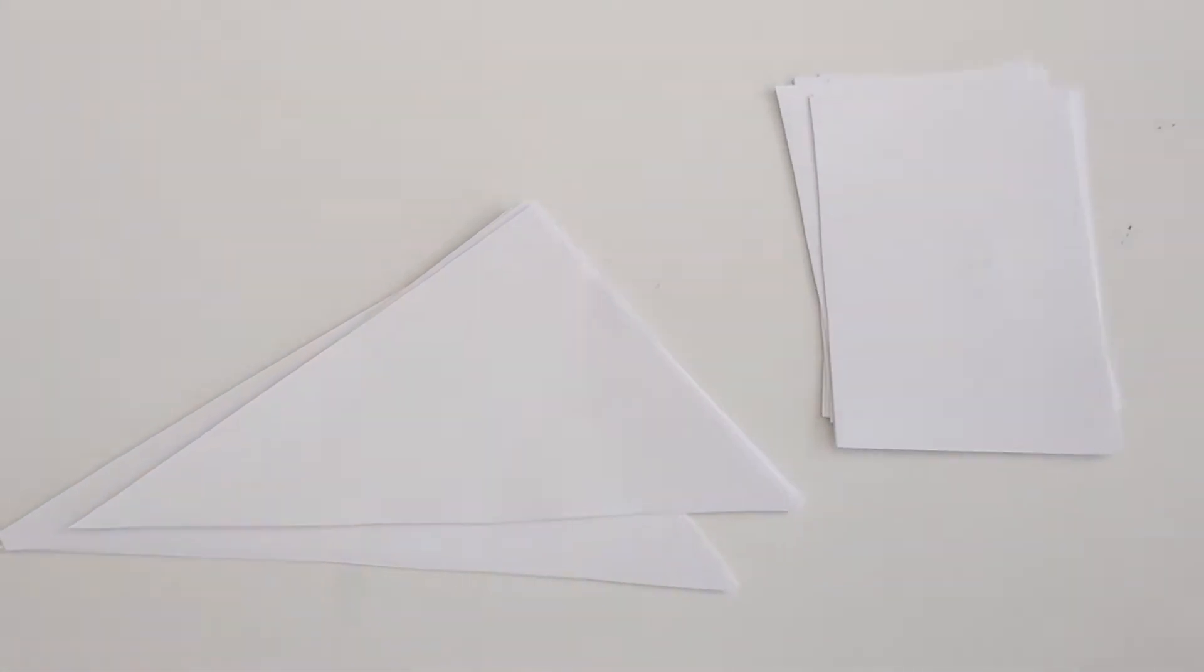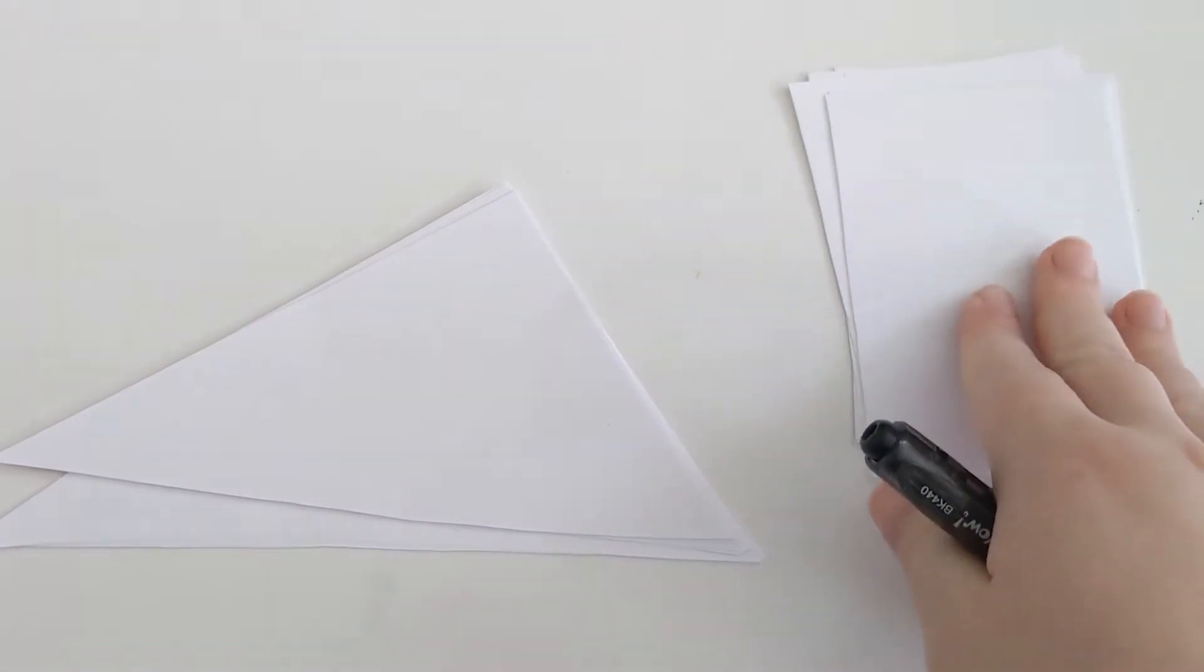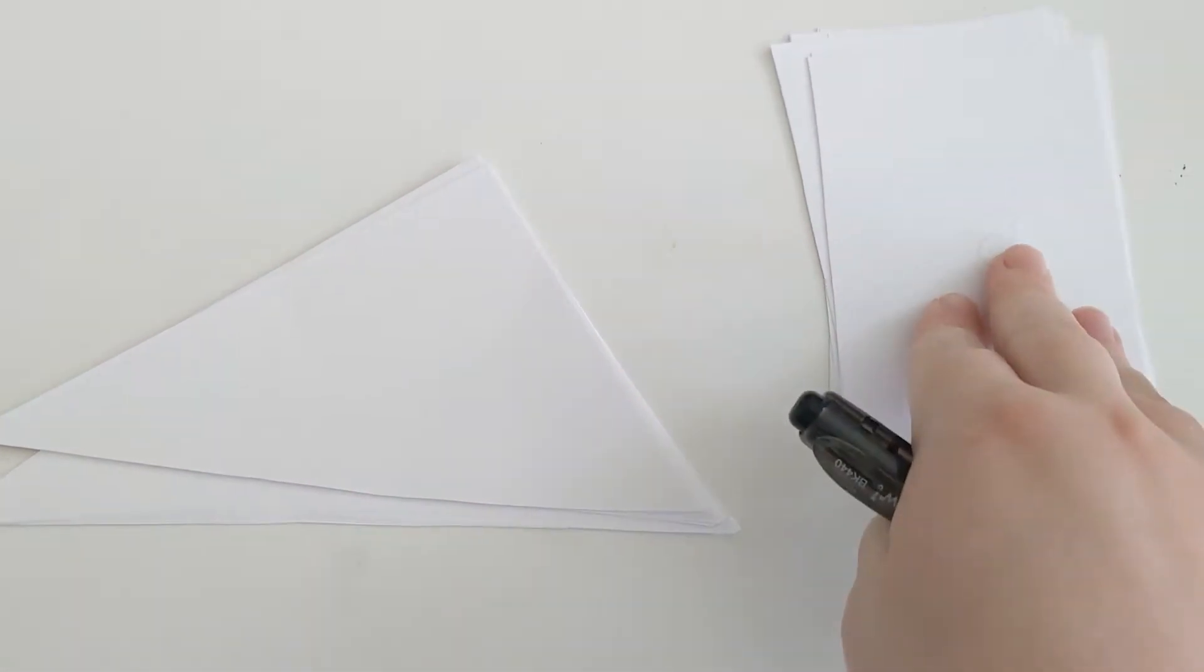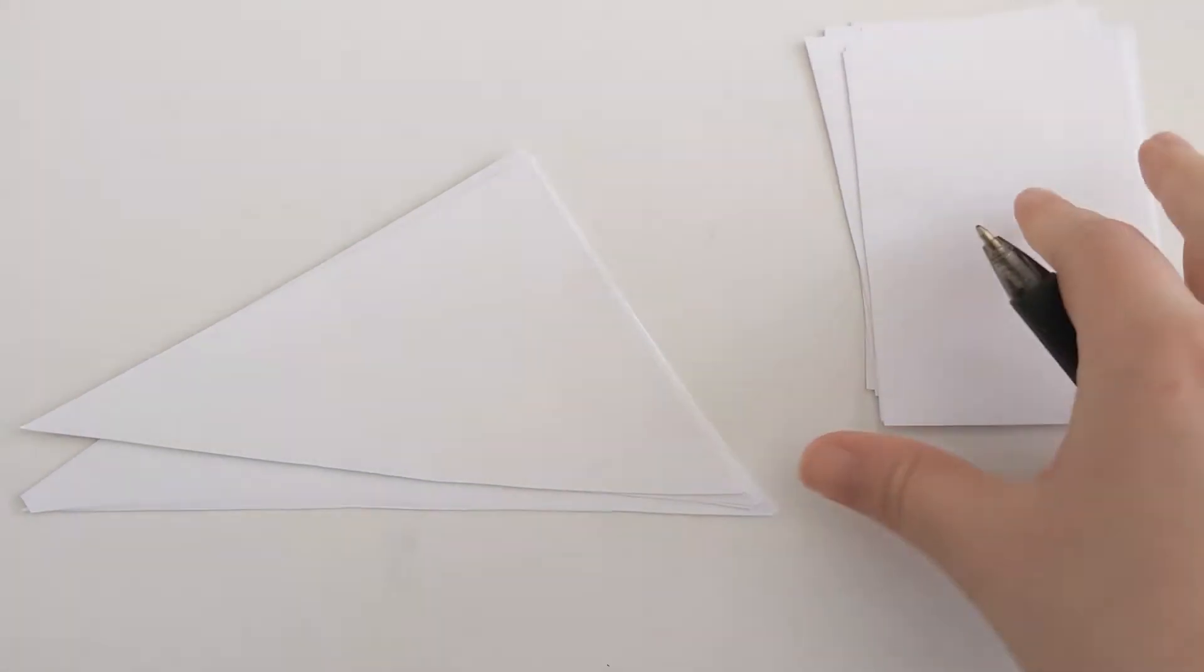All you need for this is some paper, any kind of paper, and you want to cut it into triangles. And then you need cards with numbers on them. So if you have a deck of playing cards, that's great. I just cut my own cards and wrote numbers one through nine on them.